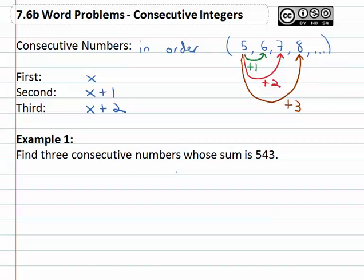In this first example where we're asked to find three consecutive integers whose sum is five hundred forty-three, we simply say the first number is x, the second number is x plus one and the third number, they said there's three, is x plus two. Consecutive numbers are one after the other and the sum, sum means we're adding, the sum is five forty-three. So if I add these together, it should equal that five forty-three.